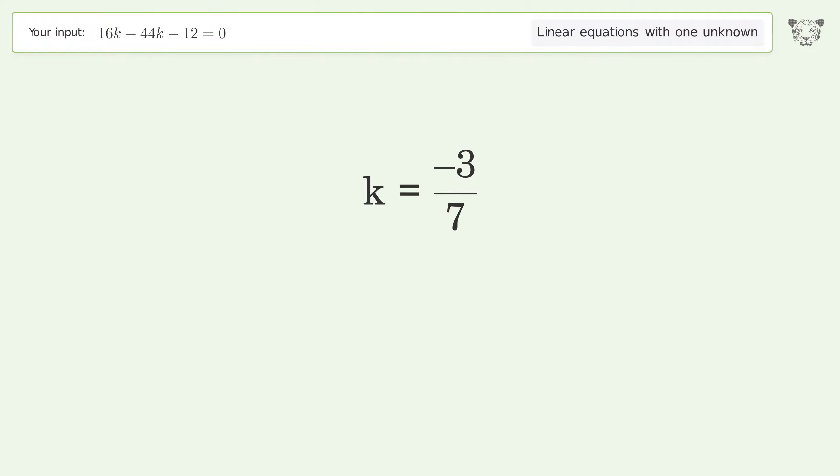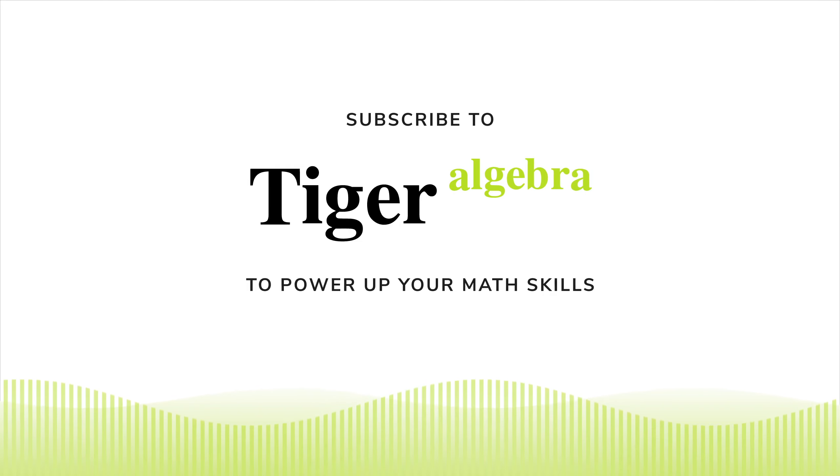And so the final result is k equals negative 3 over 7.